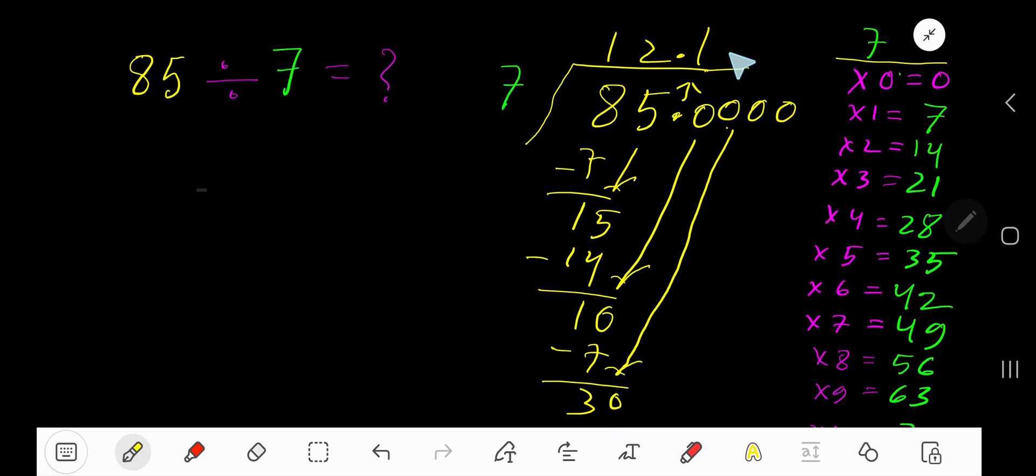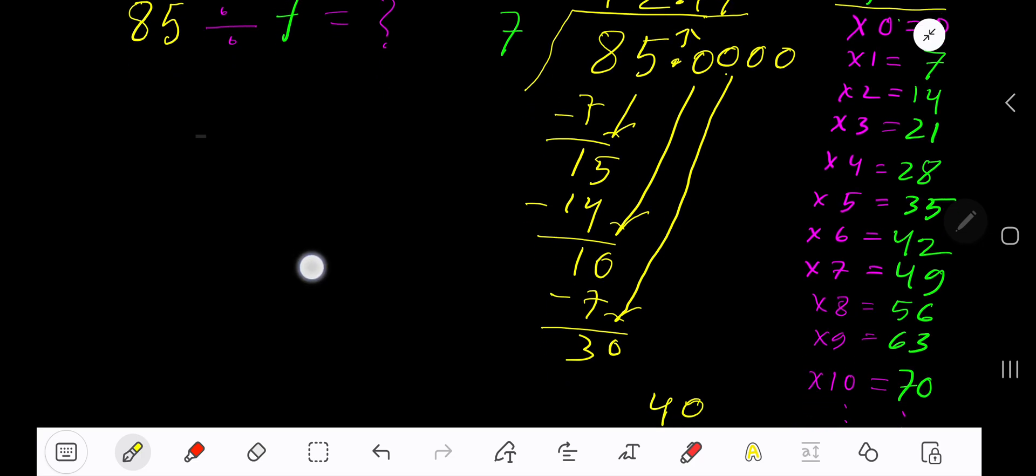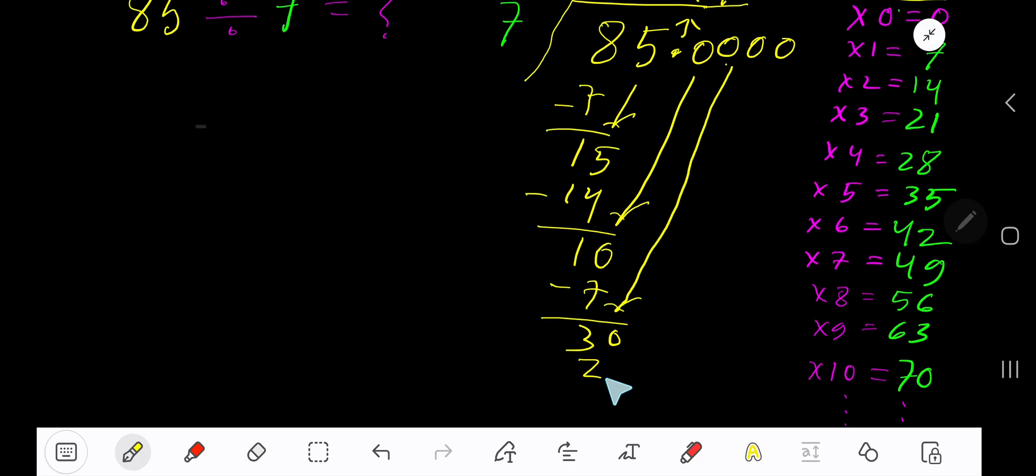5 times 7 is 35, which is greater, so 4 times. 4 times 7 is 28. Subtract to get 2. Bring down another 0.